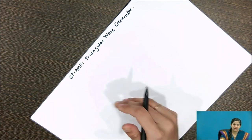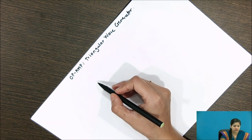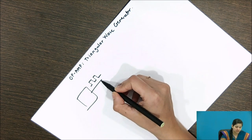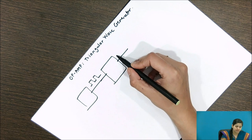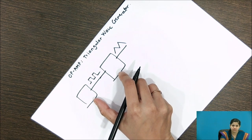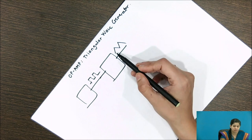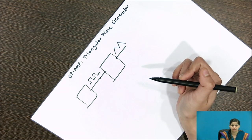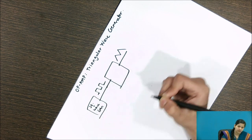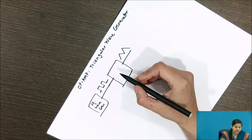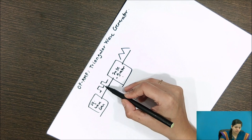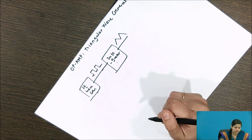There are two parts in the circuit when designing the triangular wave generator. The first part produces the square wave, and the second part converts the square wave into a triangular wave. Pause the video and identify these two circuits using op-amp. The first part is the square wave generator, and the second part is the integrator using op-amp, which converts the input square wave into a triangular wave. Let's draw the equivalent circuit.